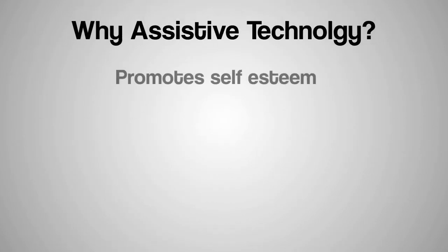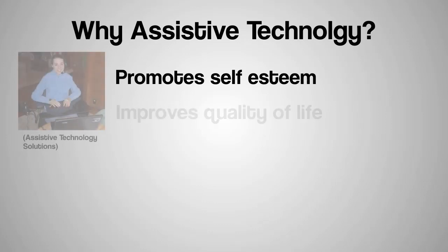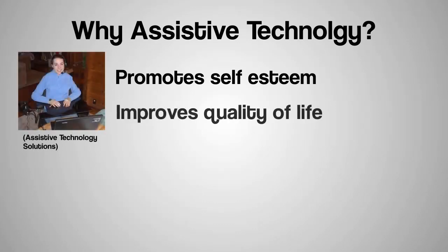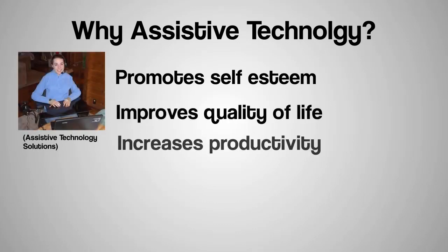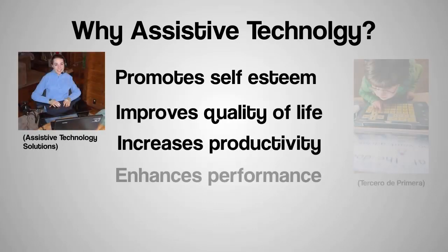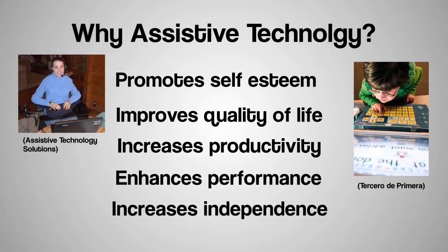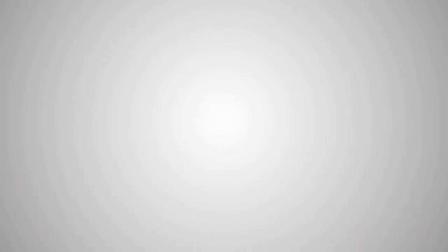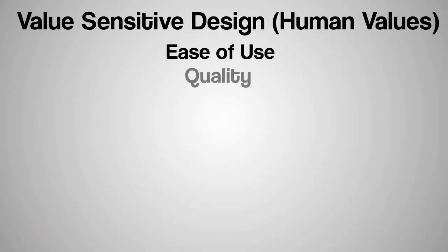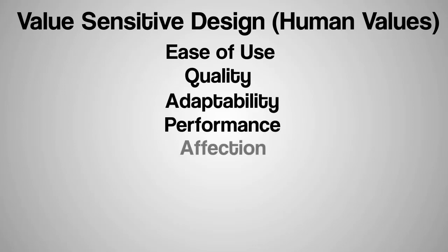Some may ask why assistive technology? Well, it promotes self-esteem, improves quality of life, increases productivity, enhances performance, and increases independence. When designing human-computer interaction, human values are taken into consideration. These include ease of use, quality, adaptability, performance, and affection.